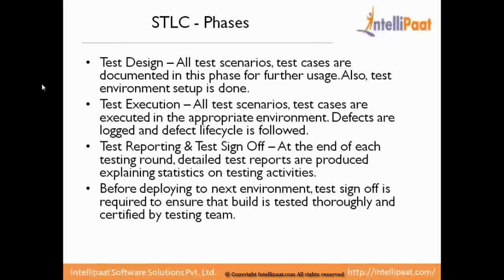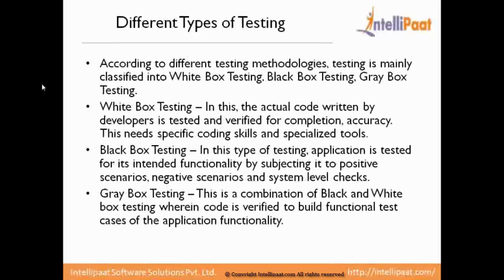Finally, the test reporting and test sign-off phase is triggered. At the end of each testing round, a detailed test report is produced giving statistics about what was tested, what was not tested, how it was tested, what defects were reported, and which test cases were executed or not. When delivering the application to the next environment — staging or production — the testing team provides a test sign-off report with a go or no-go decision determining whether the particular build should be deployed to the next environment, along with any risks the testing team wants to highlight.